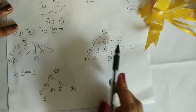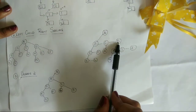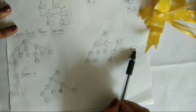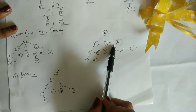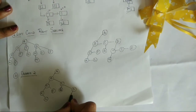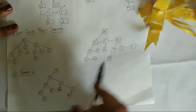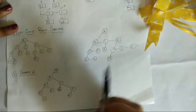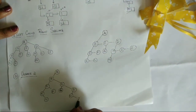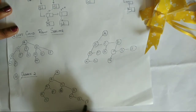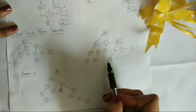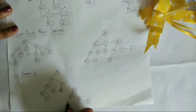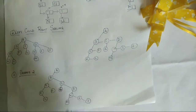Now D has child nodes H, I, and J. H is the left child of D, and I and J are siblings, so they move on as the right child of each other. H has a left child M — make that the left child of H.